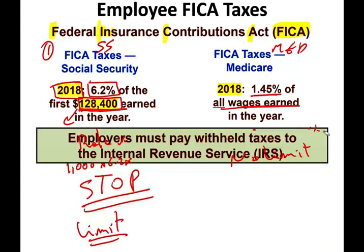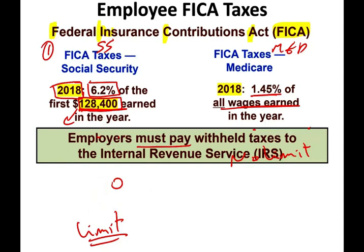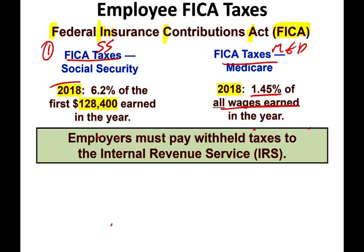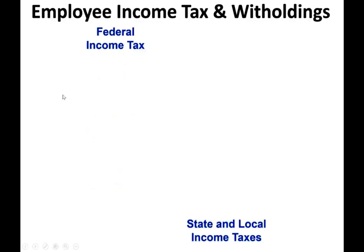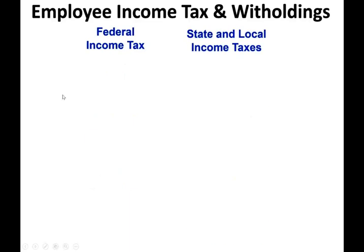The employer must — not optionally — withhold taxes and send them to the IRS. Remember, Social Security stops once you reach $128,400. In addition to FICA, employees are subject to other withholding: federal income tax, state income tax, and in some places local tax. In the US, you can be subject to up to five different taxes: FICA Social Security, FICA Medicare, federal income tax, state income tax, and local tax.